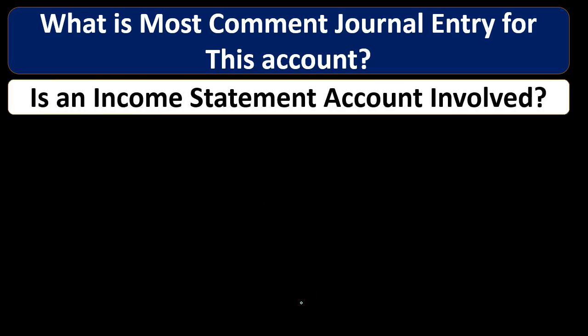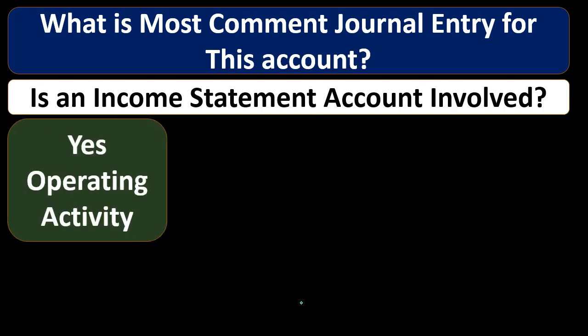Once we know the most common journal entry, we're going to ask: is an income statement account involved? Is there a revenue account or an expense account involved? If the answer is yes, then the change we're dealing with is probably something that should be in the operating activities, because the operating activities is kind of like the income statement on a cash basis. So if we're dealing with something that has to do with the income statement, then it's going to be something in the operating activities typically.